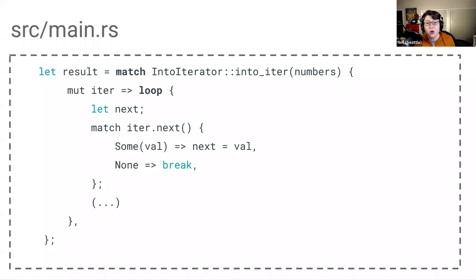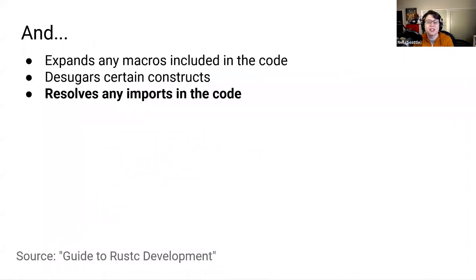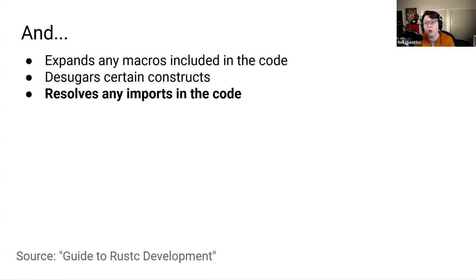The functionality of this code is identical to the for loop. But desugaring it makes it easier for the compiler to understand, optimize, and make it easier for the machine to read and execute the code. At this time, the compiler also resolves any imports in the code. So if we were importing an external crate — crate is a word for a Rust library — or using even internal crates or modules, these will be resolved here as well.